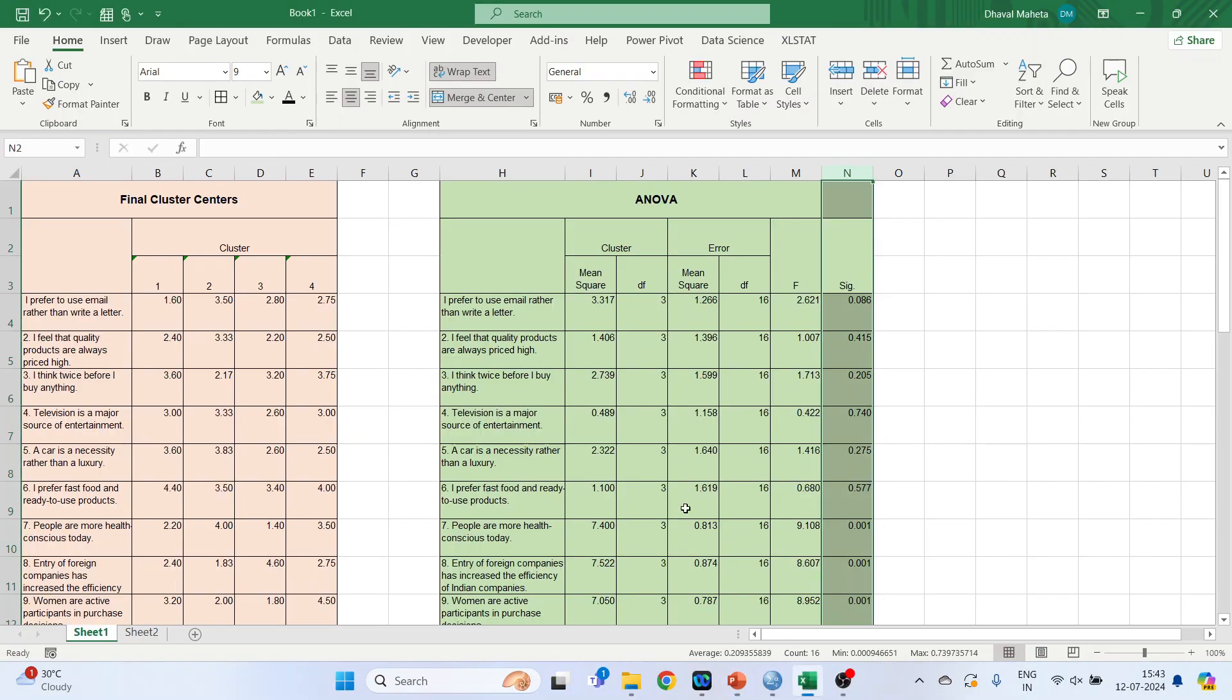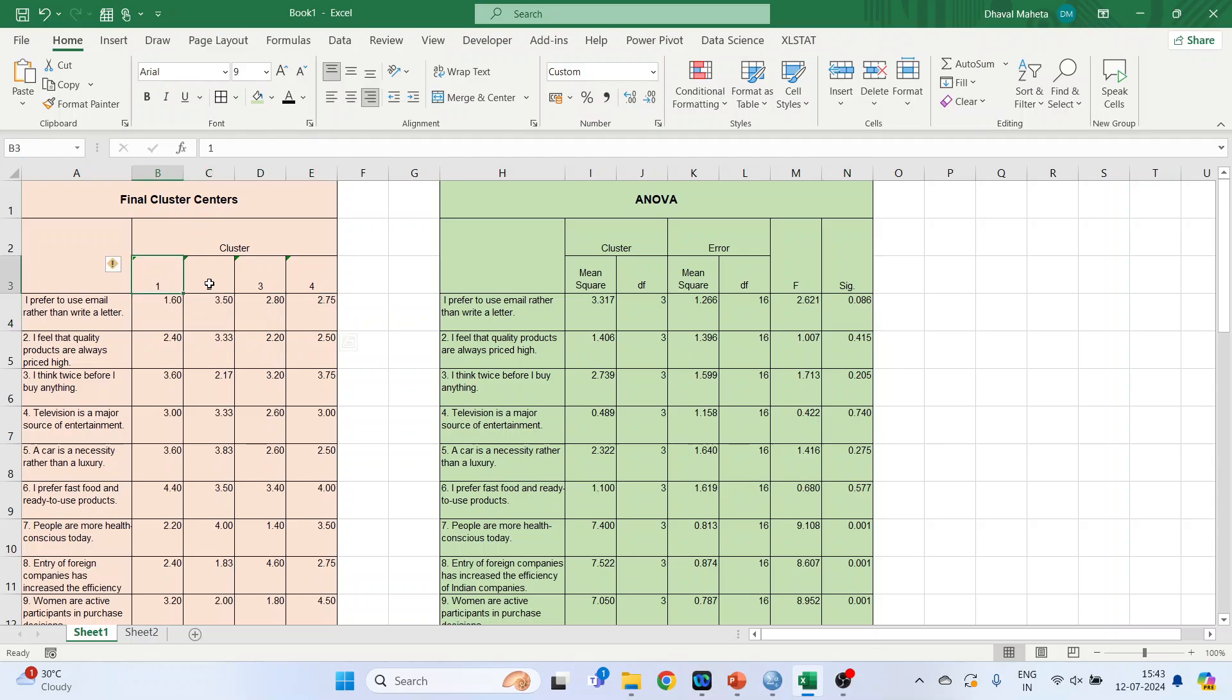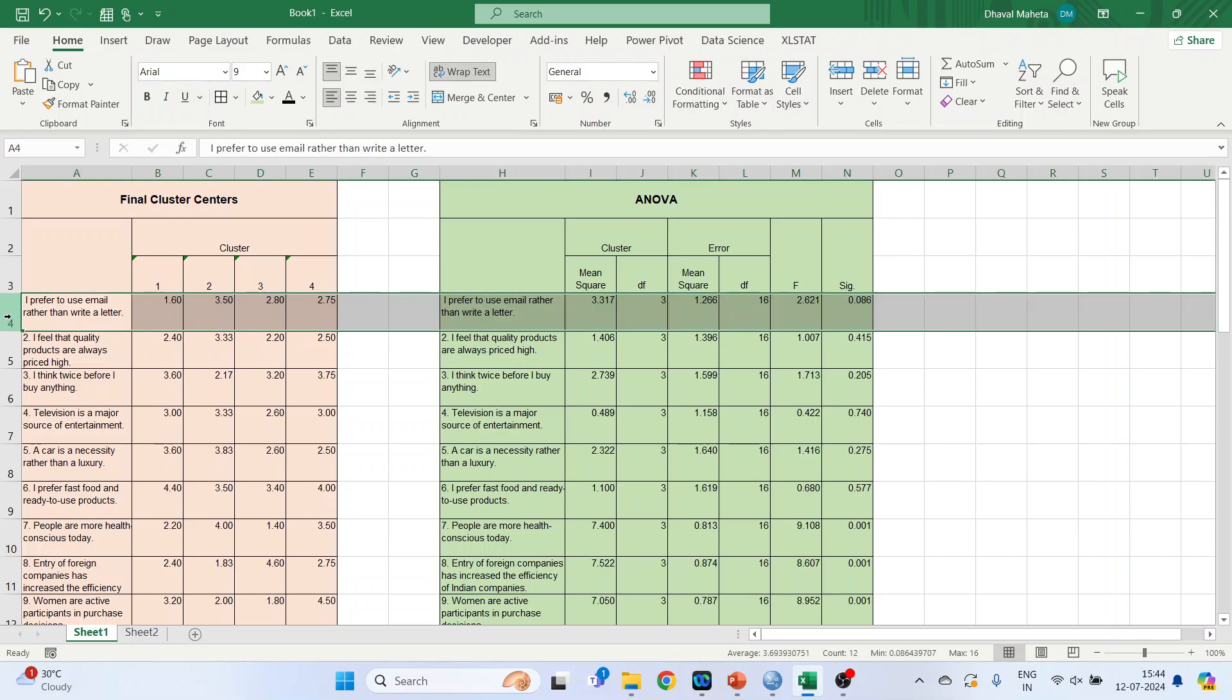The ANOVA table provided helps us to determine if the mean differences between the cluster for each variable are statistically significant or not. The p-value test the null hypothesis that the means of all clusters are equal. A p-value less than 0.05 indicates that there is a statistically significant difference between the clusters. Let's see the first statement. Here the p-value is more than 0.05. So the mean value of this statement in these four clusters will be more or less equal to each other. And therefore this statement is not so significant in creating the clusters. So we will remove it.